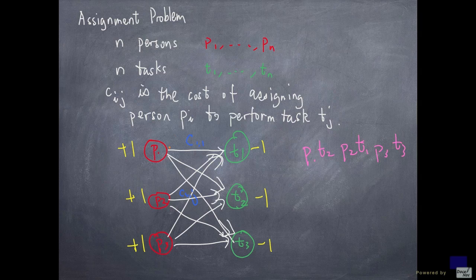Then I can get a feasible flow by setting this arc to 1, this arc to 1, and this arc to 1. All other arcs to 0. And the cost of this flow is the same as the cost of this assignment.